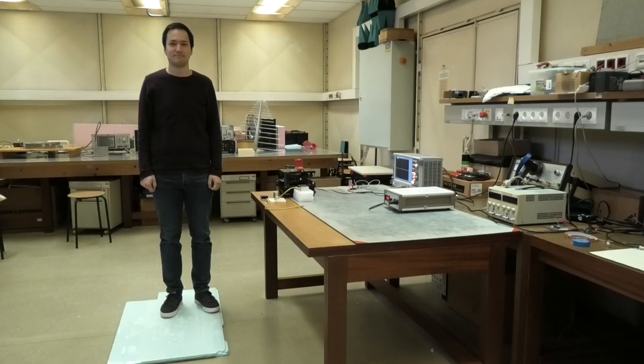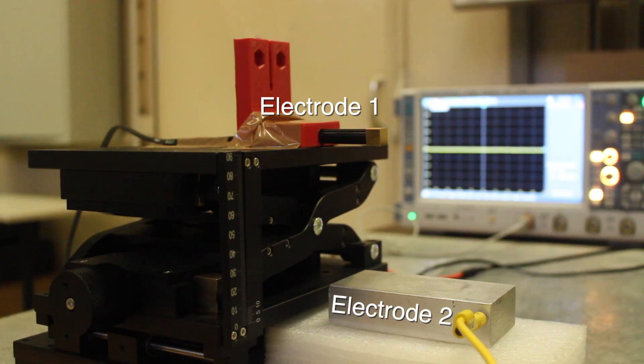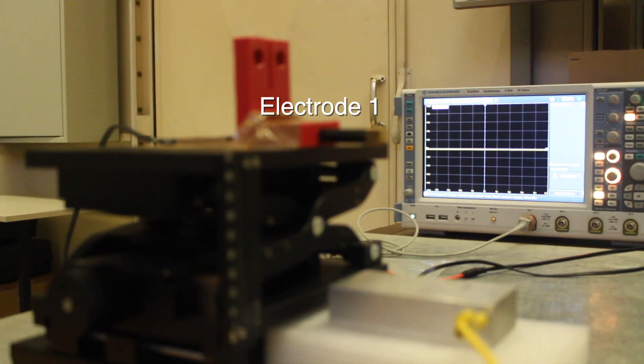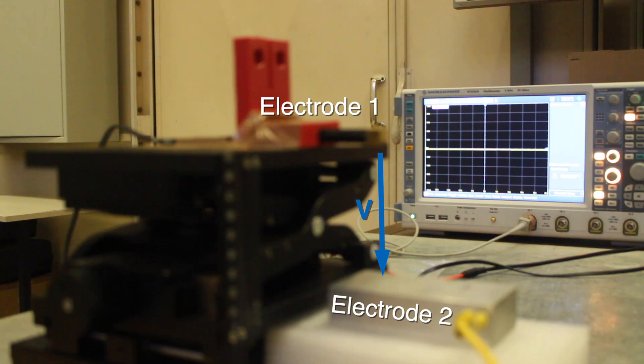I would like to demonstrate the triboelectric effect with the help of this setup. You can see here two electrodes. One electrode is connected to the oscilloscope and I'm connected to the second electrode. This setup is calibrated accordingly so that the potential difference is displayed on the scope.